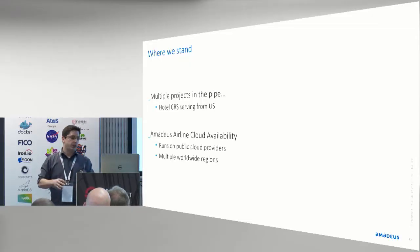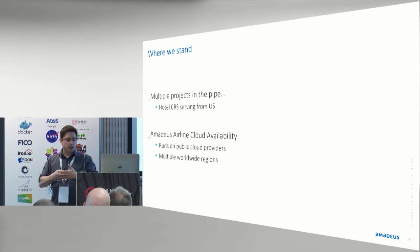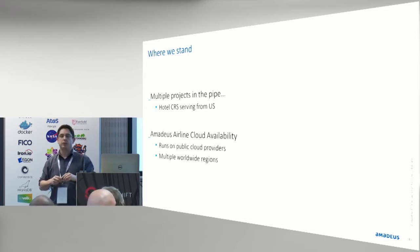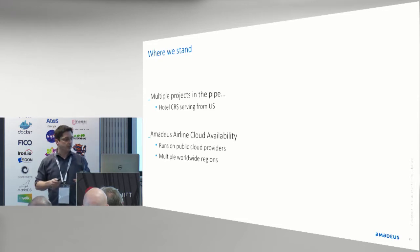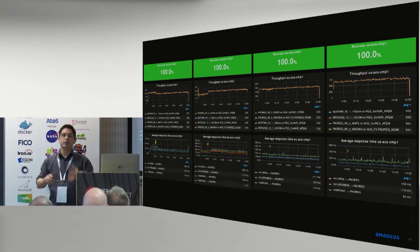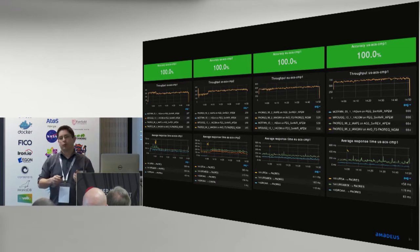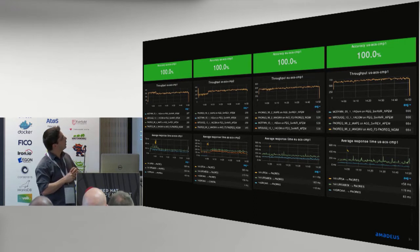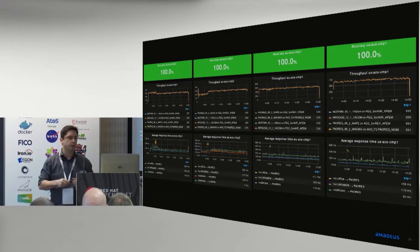Today we have several projects in the pipeline. We have a hotel CRS — customer reservation system — which will be serving out of the United States soon. We have in production Amadeus Airline Cloud Availability, running on several regions on public cloud providers — deployments in Europe, Asia, and the United States. We're really happy to see it serving low latency requests for airline availability, around 200 milliseconds or less, across four-plus clusters. They're serving several thousand transactions per second, working really well, and our operations folks are very happy.